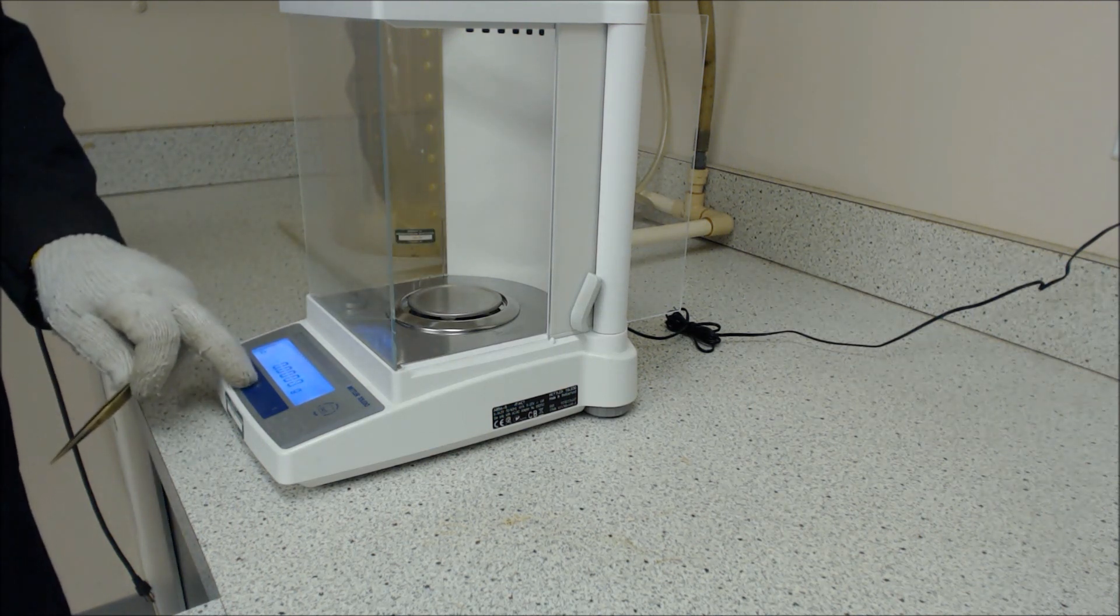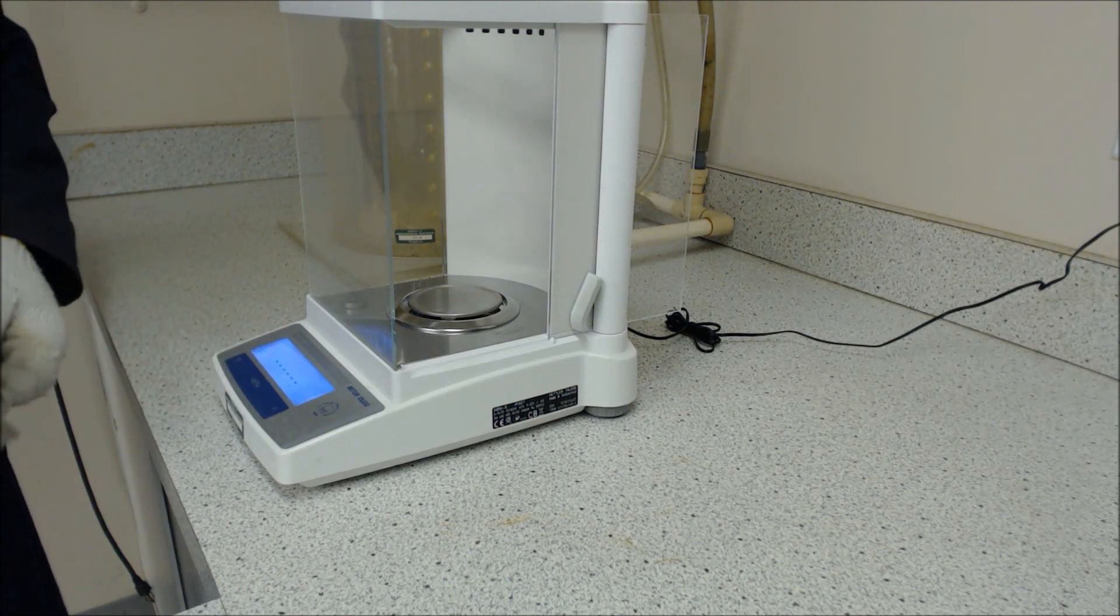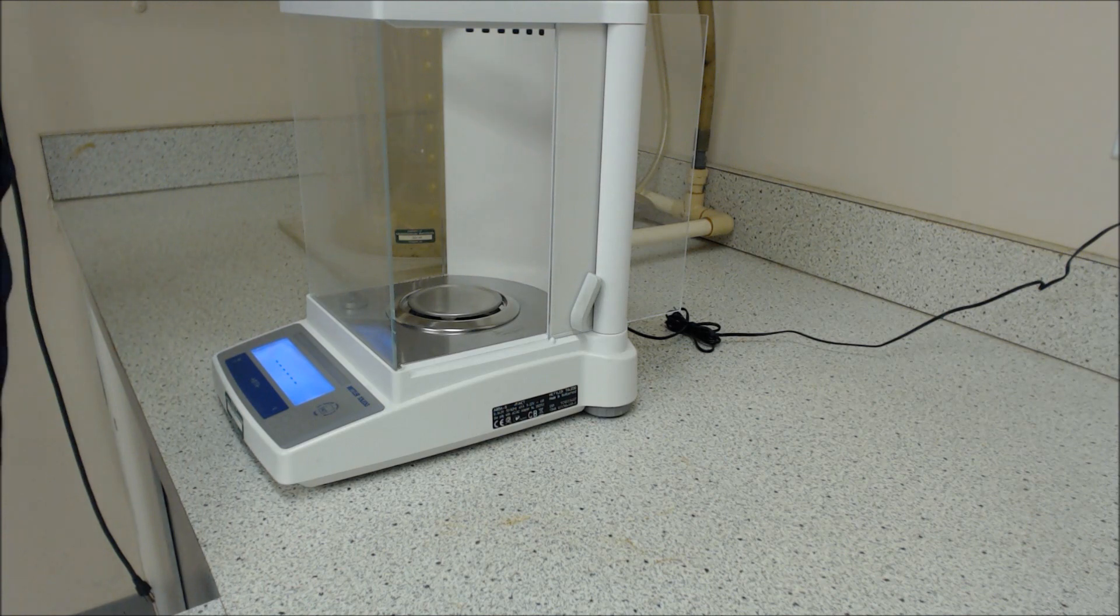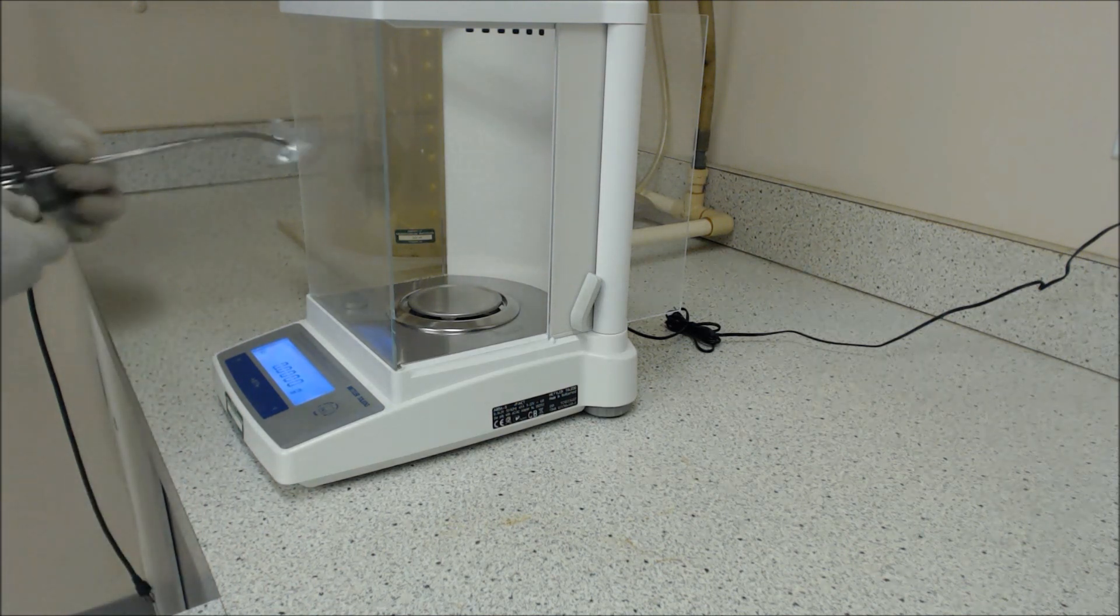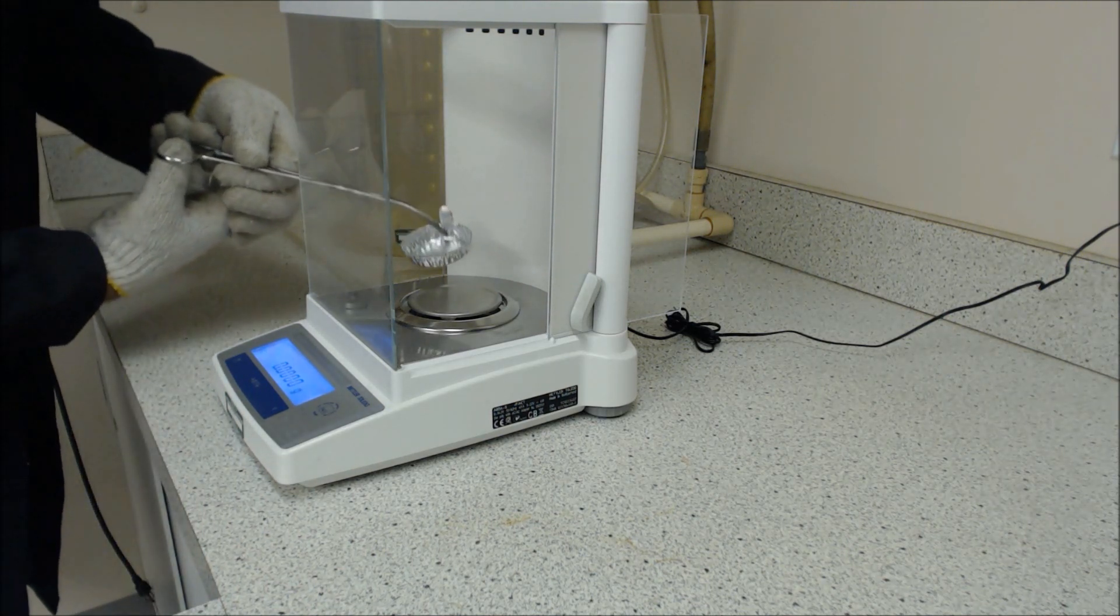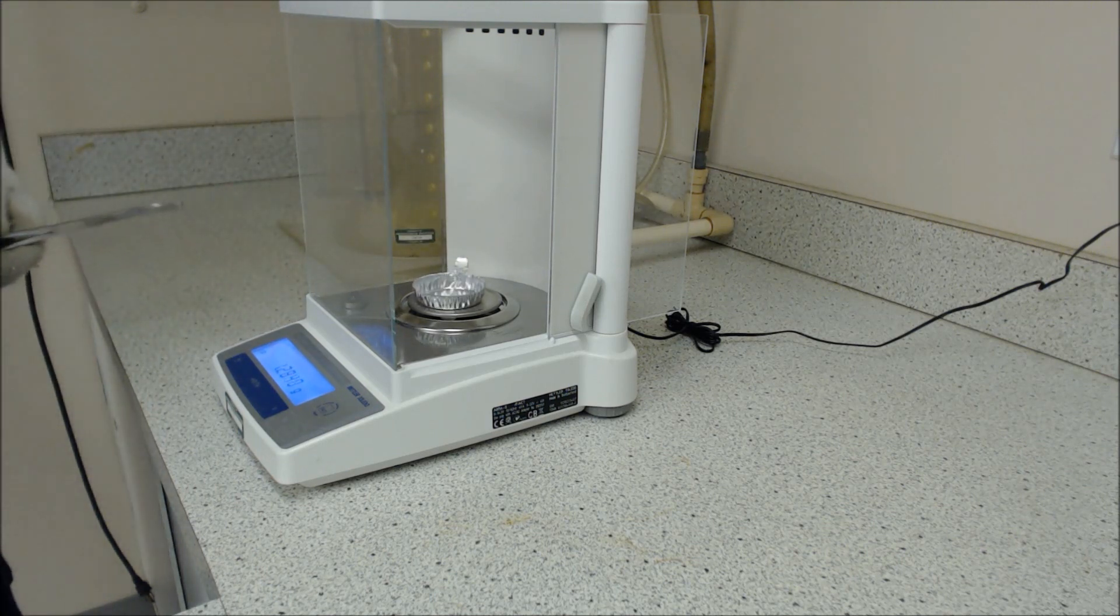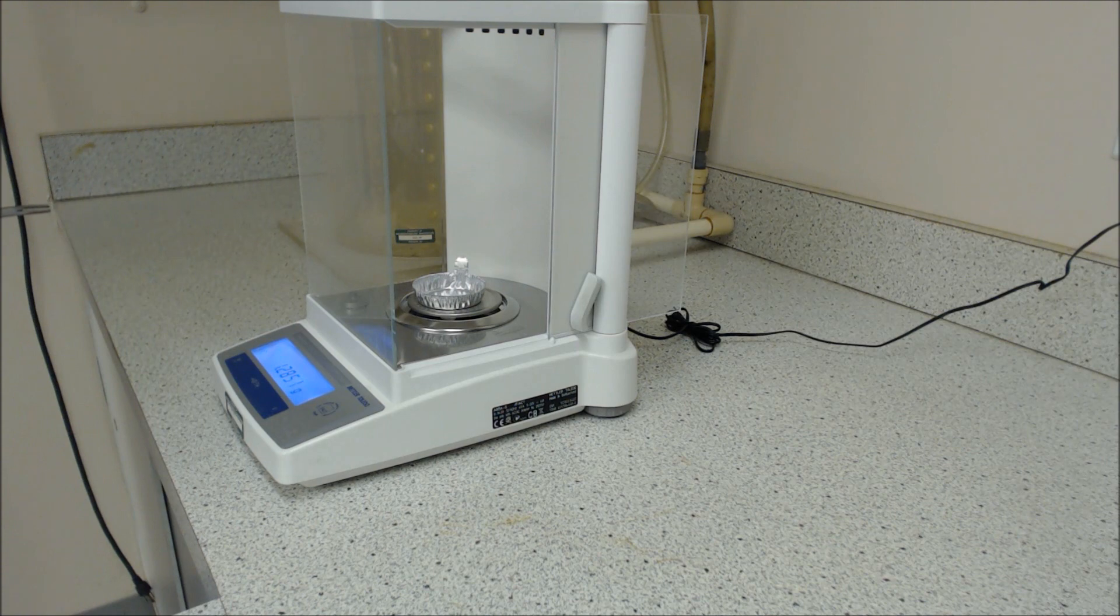We re-zero the device and then the first item is to measure the pan empty. This is the pan that's empty. It's been conditioned. There's no oil on the pan. It's absolutely dry.